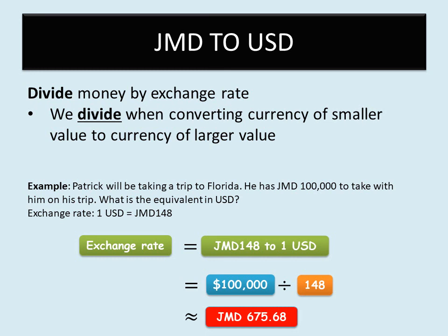Currency exchange is straightforward once you identify the direction of conversion. From a larger currency value to a smaller one, you multiply. From a smaller currency value to a larger one, you divide. Once you know the exchange rate and the amount being converted, you are good to go. Thanks for watching this video, students, and take care — see you soon.